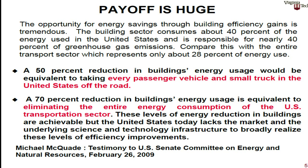If you could get a 50% reduction in commercial and residential buildings energy usage, this is the equivalent of taking transport in the United States off the road. And 70% is equivalent to taking the entire transportation sector off. You can't easily touch the transportation sector because it takes a generation — 30 to 50 years — to change cars and trucks and things like that. So buildings are important.